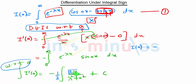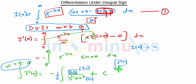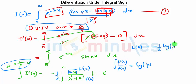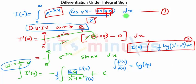We multiply and divide by 2 so the numerator becomes the derivative of the denominator (λ² + a²). Using the formula ∫ f'(a)/f(a) da = log f(a), we get I(a) = −½ log(λ² + a²) + C.